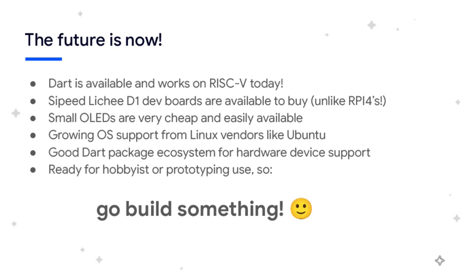Despite the issues, the future — and even the present — looks bright for this kind of use of Dart and eventually Flutter. Dart is available today for RISC-V and in my testing works well. The Cypeed Lychee development boards are available and reasonably priced, unlike Raspberry Pi 4s which are still almost impossible to obtain in early 2023. OS support is growing for RISC-V, and Ubuntu now has official support for the Lychee board. Small standalone OLED screens are very cheap and readily available, and there is support in the Dart package ecosystem to use these little screens. Overall, I found the combination of Dart and the embedded hardware shown here is ready today for hobbyist or prototyping use.